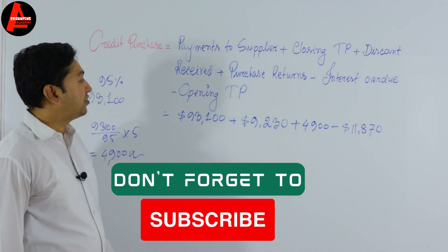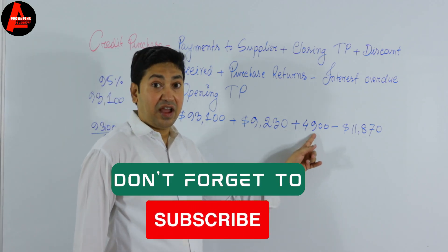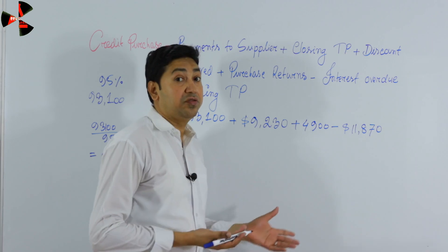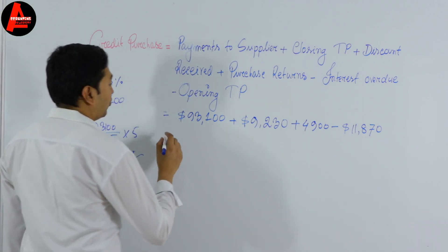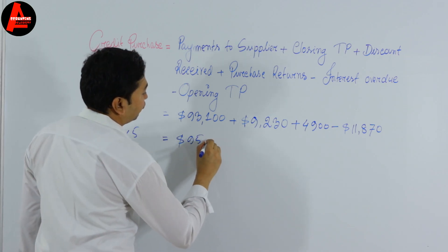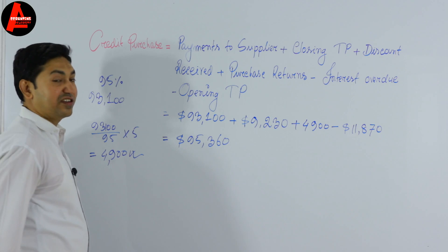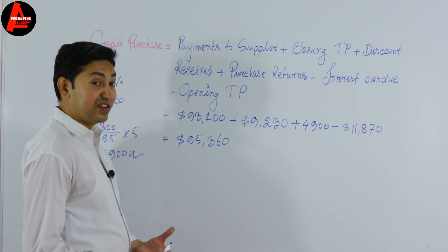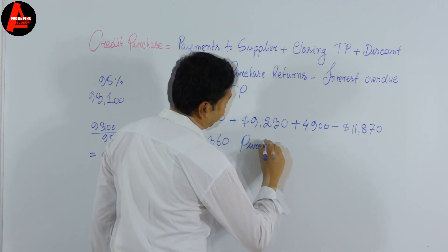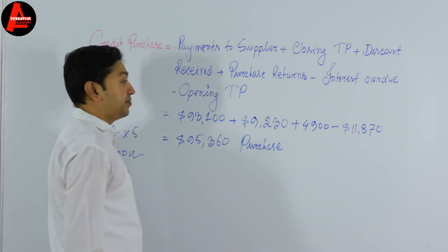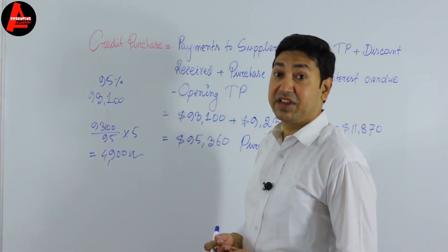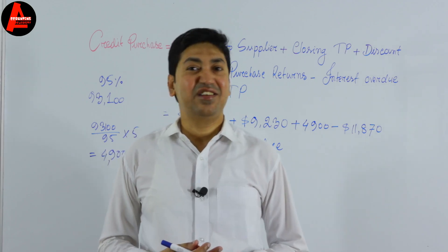Now we add all three items — $93,100 + $9,230 + $4,900 — and subtract the opening trade payables of $11,870. Doing all these calculations gives us $95,360. This is the total credit purchase. It's very simple to calculate once you know the formula — it just takes practice.